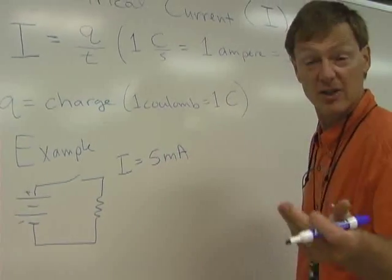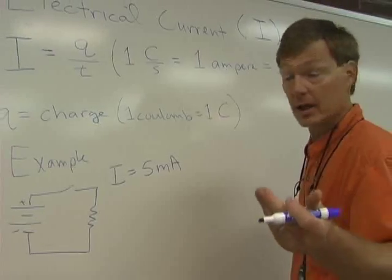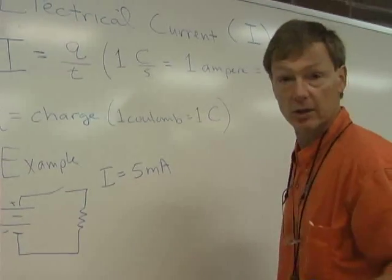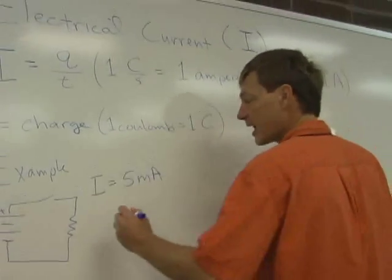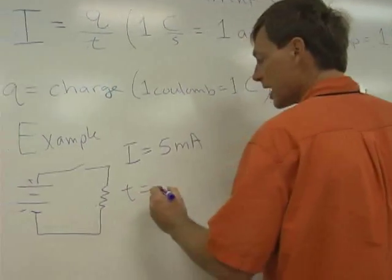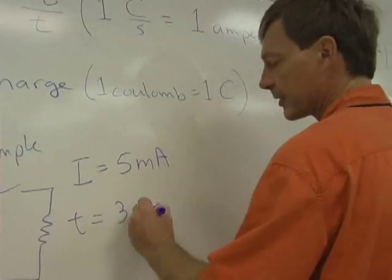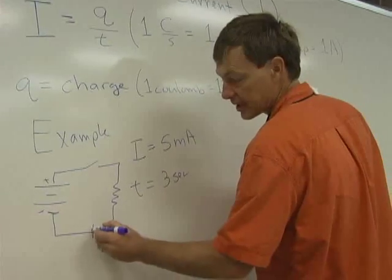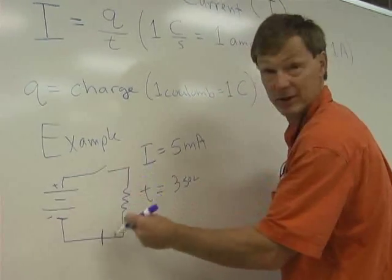You should know milli and micro. Milli is 1,000. It's 10 to the minus 3. And micro is a millionth, 10 to the minus 6. So say I've got a current of 5 milliamps. And I'm going to let it run for a time of three seconds. And I want to know how much current passes through, say, this point right there, any point. They're all moving at the same rate.